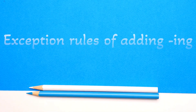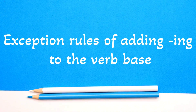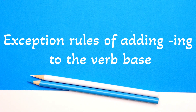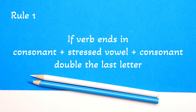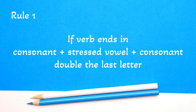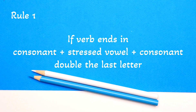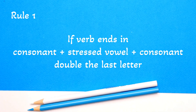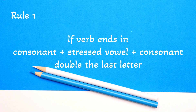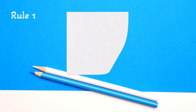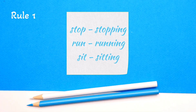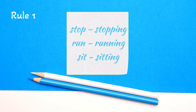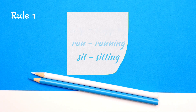There are some exceptional rules for adding -ing to the verb base. Rule number one: if the base verb ends in consonant plus stressed vowel plus consonant, we double the last letter. For example: stop → stopping, run → running, sit → sitting.